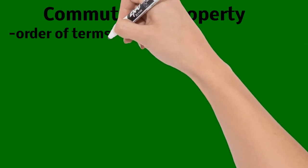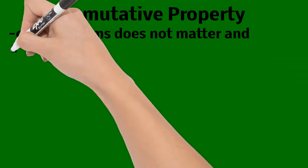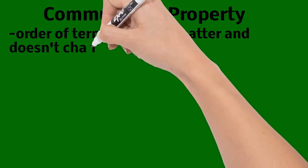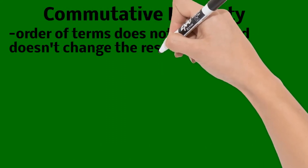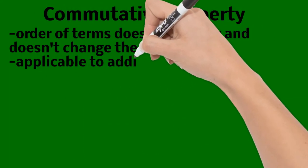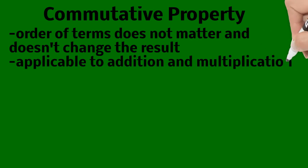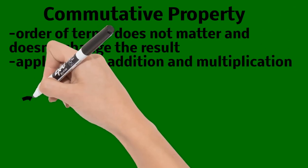Commutative property: the order of terms does not matter, and it doesn't change the result. It is applicable to addition and multiplication.